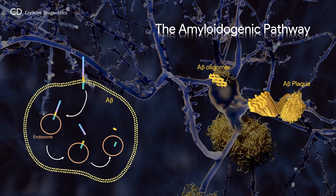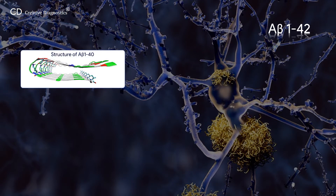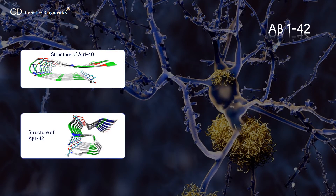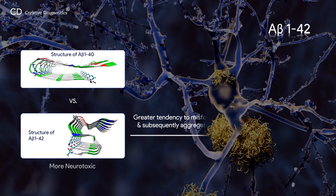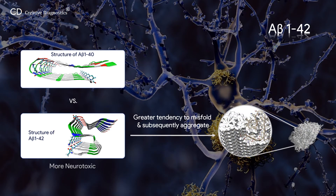Successive cleavage of C99 leads to the generation of abeta peptides, which are secreted outside the cell. Monomeric and oligomeric forms of abeta overwhelm the brain's capacity for clearance and degradation and form extracellular plaques, causing neurotoxicity through several mechanisms including microglial infiltration, oxidative stress, and synaptic damage. Most of the peptides are 40 residues in length, with a small percentage containing 42 residues — Abeta 42. Abeta 42 is considered the more neurotoxic form, because the extra 2 amino acids provide a greater tendency to misfold and subsequently aggregate. Elevated plasma levels of abeta 42 have been correlated with Alzheimer's disease.